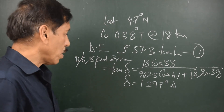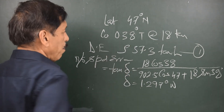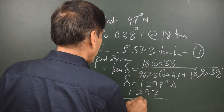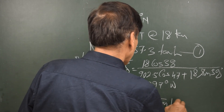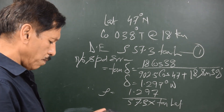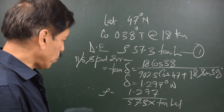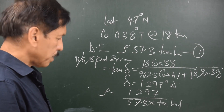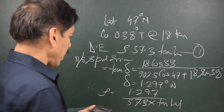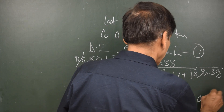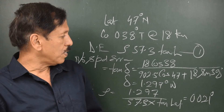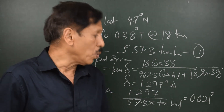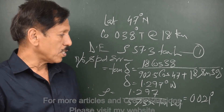Since the errors cancelled, damping error equals 1.297° east. Using the damping error formula: ρ = 1.297 / [57.3 × tan(47°)] = 0.021. In this example, by knowing that the axle showed zero error, we were able to determine the value of ρ as 0.021 degrees.